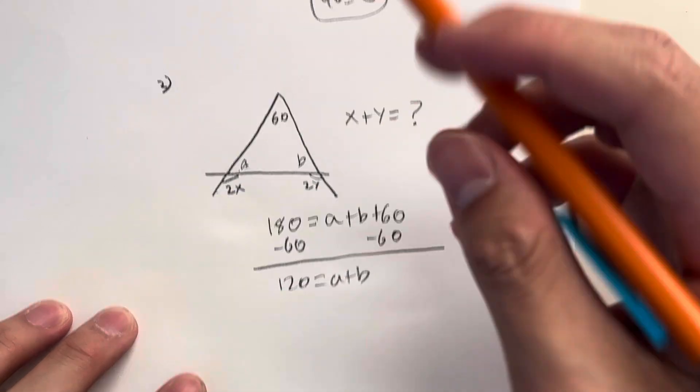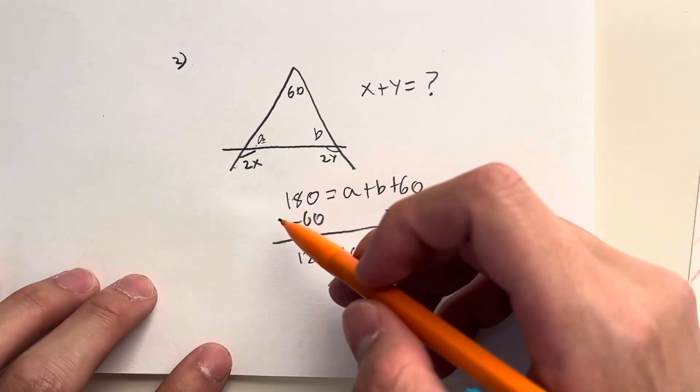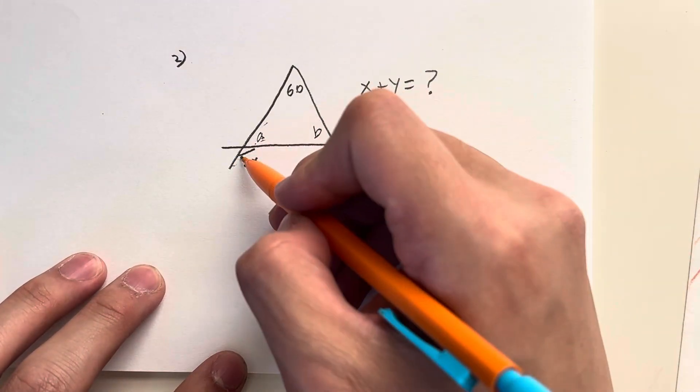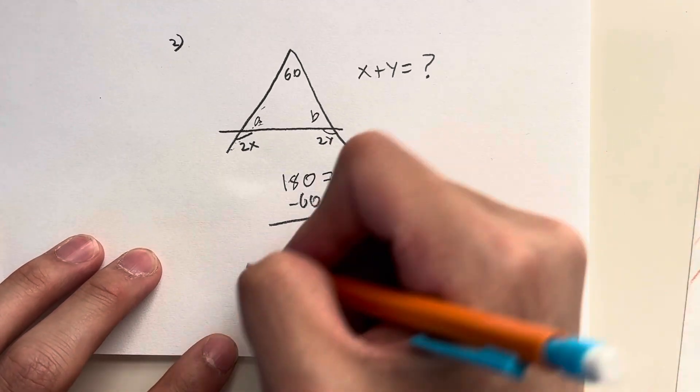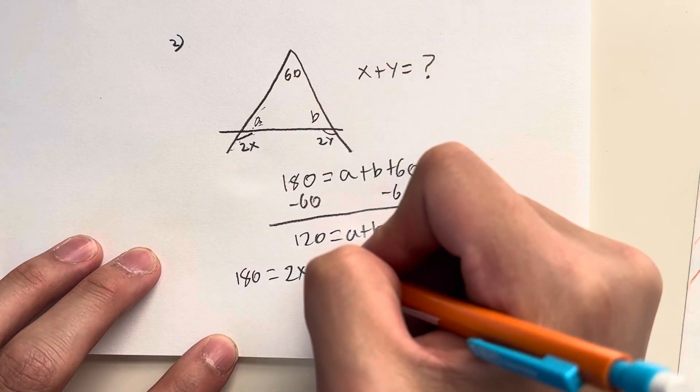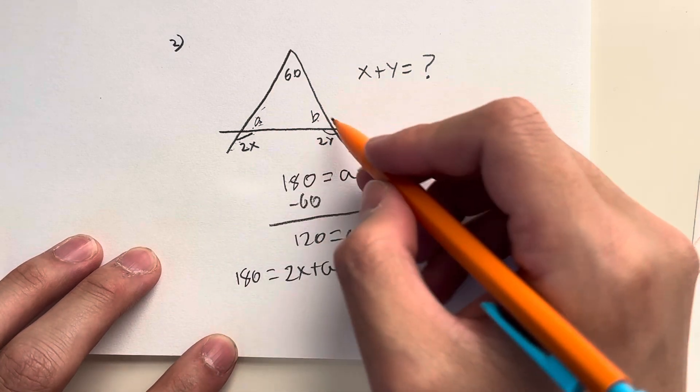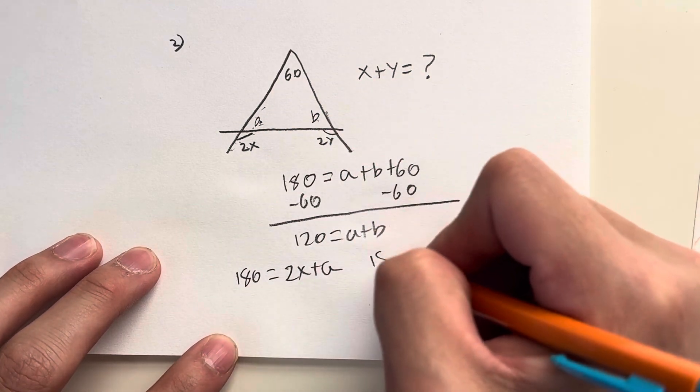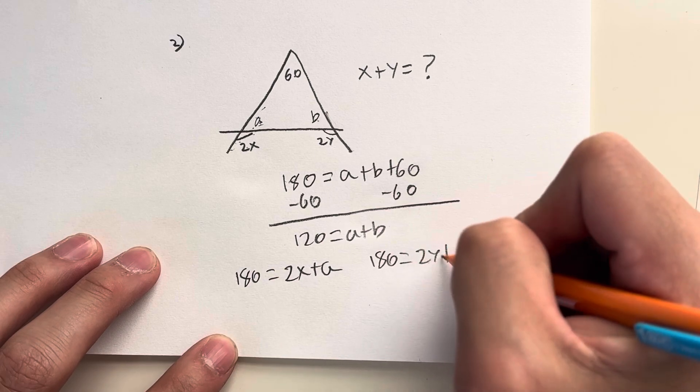Because as mentioned in problem number one we have the rules about a straight angle. All straight angles sum up to how many degrees? They should always sum up to 180. So 180 is equal to this value 2x plus this value A. And over here I have another straight angle. So 180 is also equal to 2y plus B.